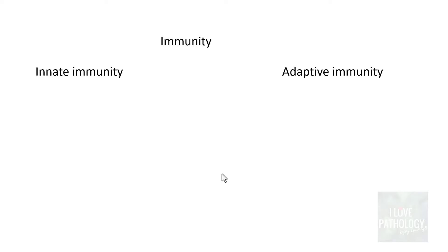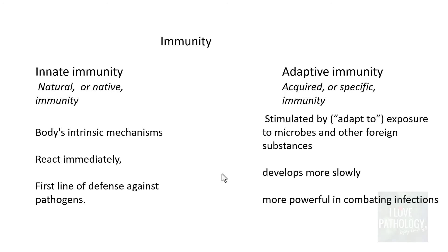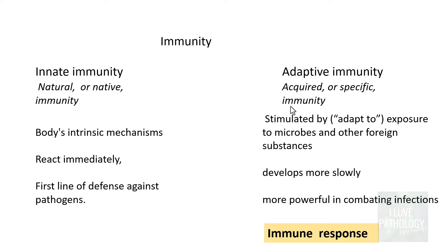Immunity is further categorized into innate immunity and adaptive immunity. Innate immunity is also referred to as the body's intrinsic mechanisms — it reacts immediately and is almost always the first line of defense. Adaptive immunity, also called acquired or specific immunity, is stimulated or adapted to exposure to various microbes and foreign substances. It develops more slowly but is more powerful in combating infections. The term 'immune response' is most often used for adaptive immunity.